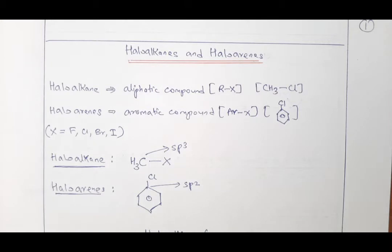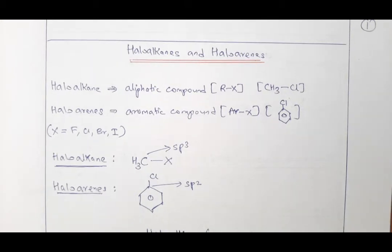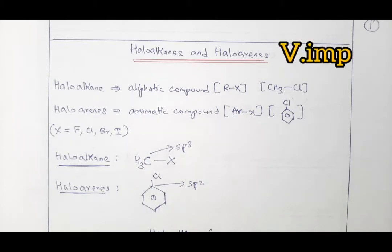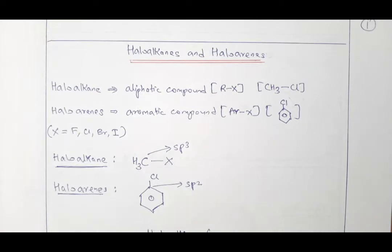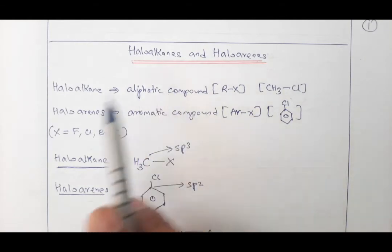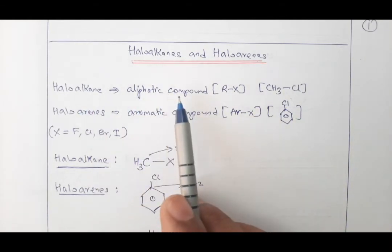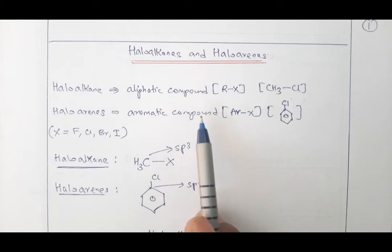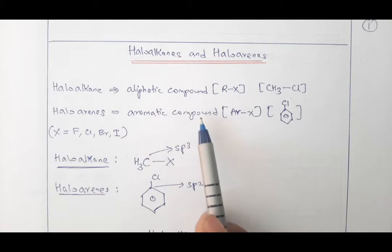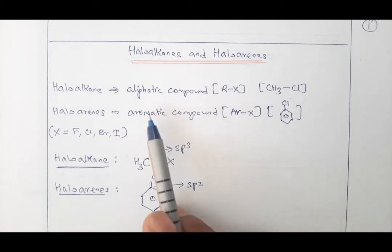Students, from today we are going to cover the second last chapter of the syllabus for the first semester, that is Haloalkanes and Haloarenes. We are stepping for the first time into the organic chemistry section. Haloalkane means aliphatic compound whereas Haloarenes means aromatic compound. Aromatic compounds usually contain a benzene ring, which is called arene.